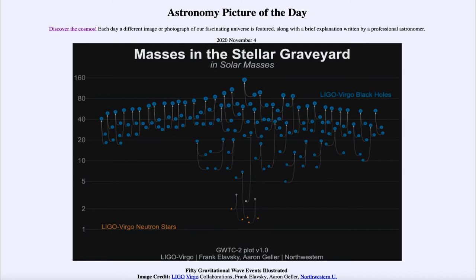There would be gravitational waves due to the gravitational force. However, the gravitational force is many times weaker, and that means that these waves would be much harder to detect. So it took about a hundred years after Einstein predicted these for them to actually be detected.